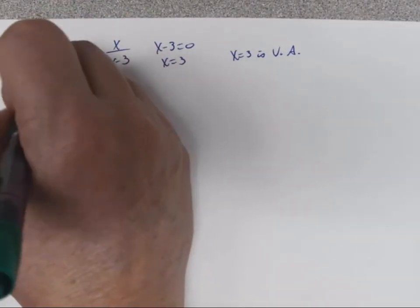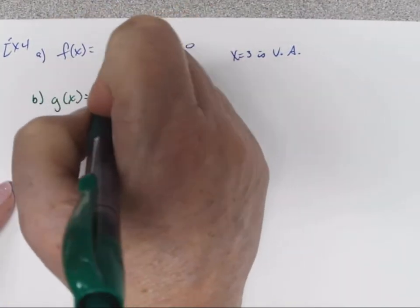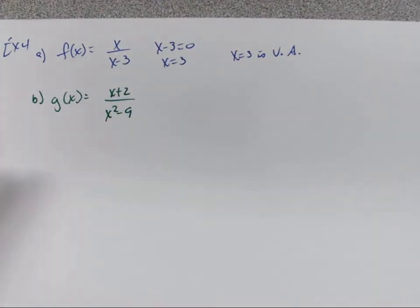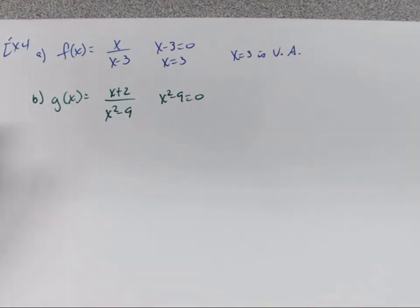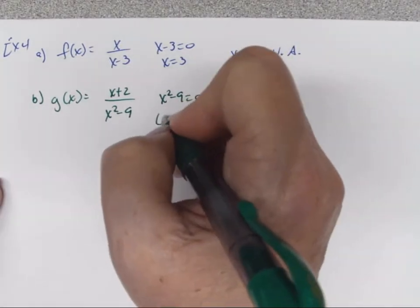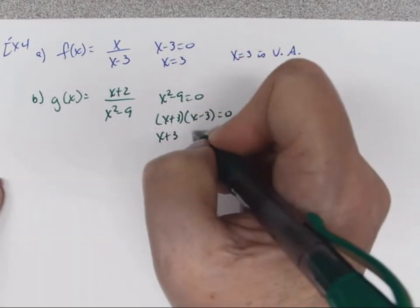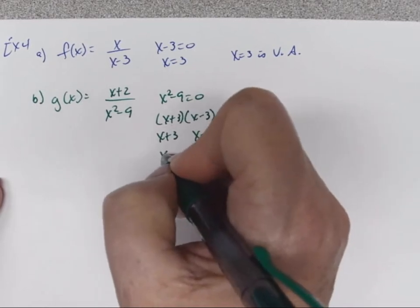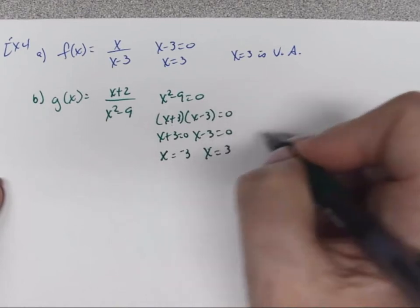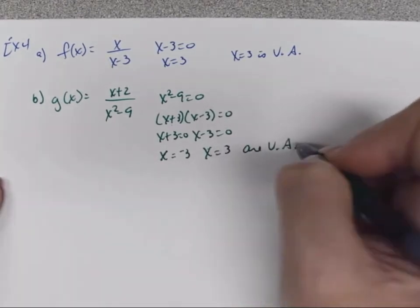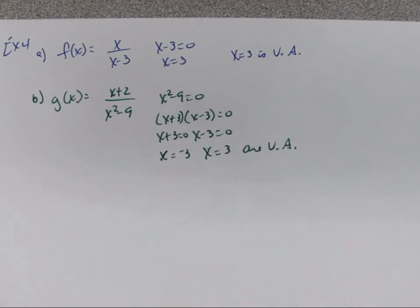For part B, g(x) = (x+2)/(x²-9). We set x²-9 = 0 and factor using difference of squares. Setting each factor equal to 0 gives x = -3 and x = 3. These are the two vertical asymptotes. They are lines, not points.